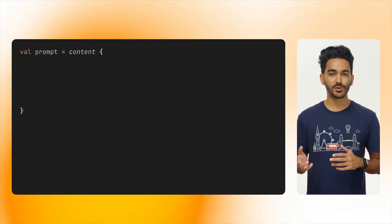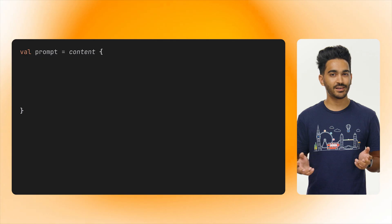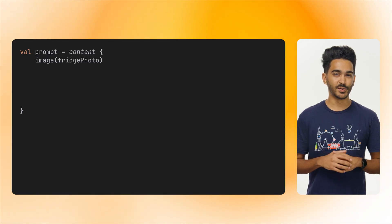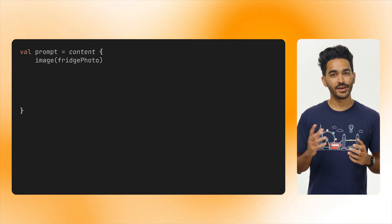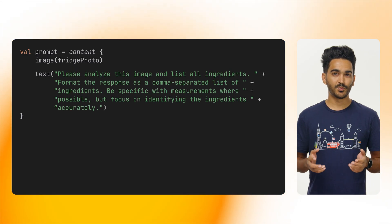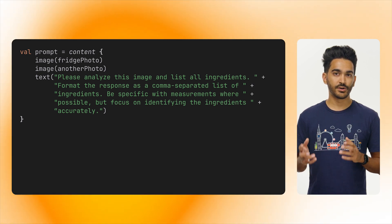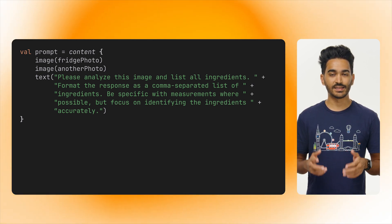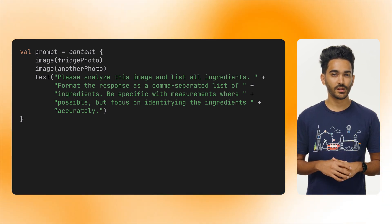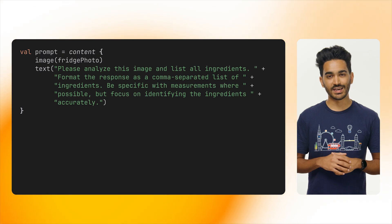Once the user has selected the image, we can send it to Gemini by creating a variable for our prompt and then adding an image and asking a question. You can also add more images if you need, as long as the total request size is less than 20 megabytes. But we only need a single image for this app.